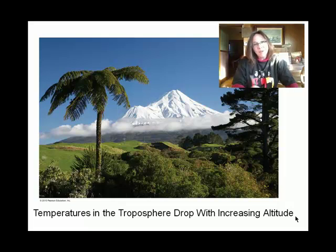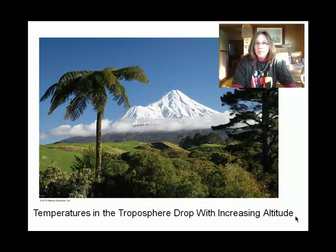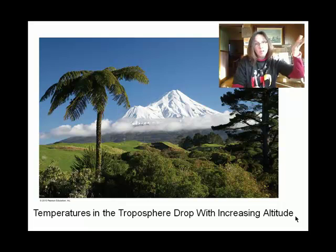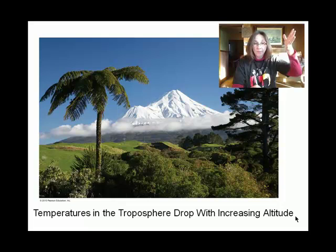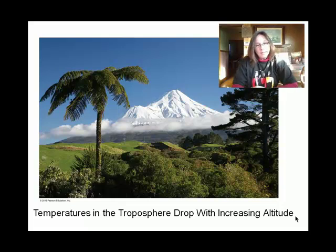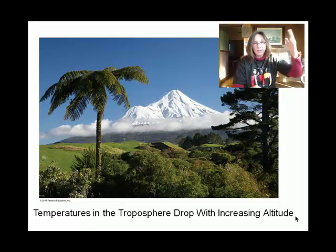So welcome to yet another segment in Chapter 1. We most recently in Chapter 1 talked about how the density of the air — the air gets thinner as you climb a mountain, as you go up vertically. And so now we're going to talk about layers of the Earth's atmosphere, keeping all of that in mind.